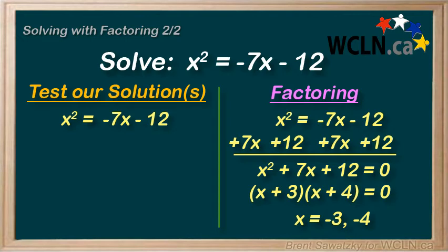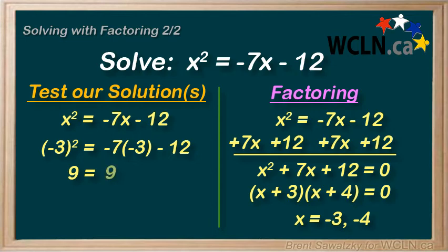If we plug in x equals negative 3 we get negative 3 squared equals negative 7 times negative 3 minus 12. On the left, negative 3 squared is 9. And on the right we have 21 minus 12, and 9 equals 9. Yeah that's confirmed. x equals negative 3 makes this true.